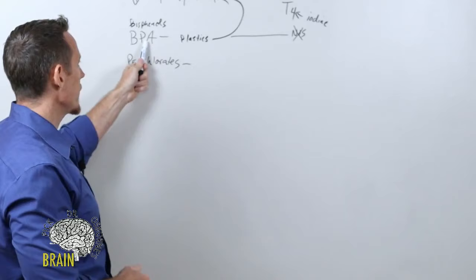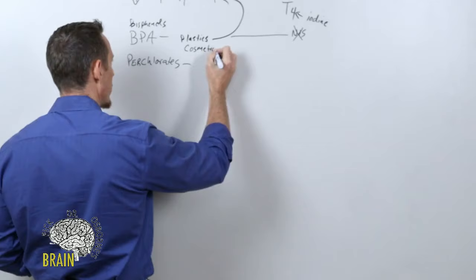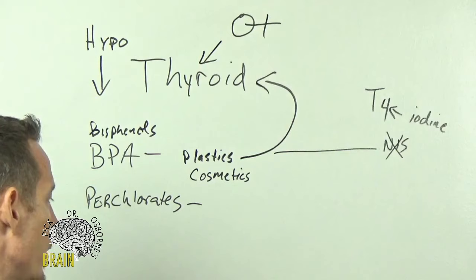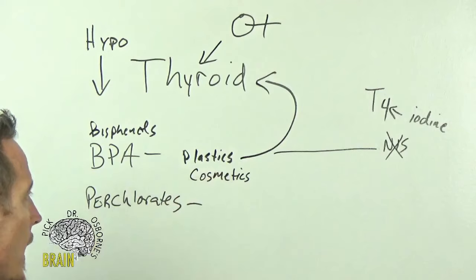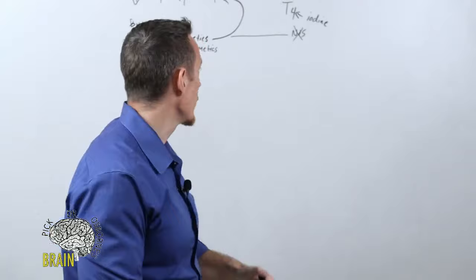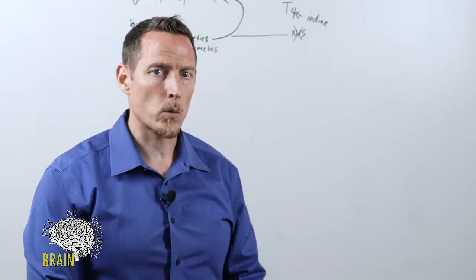Bisphenol chemicals are also commonly found in cosmetics, which is one reason women are disproportionately affected with low thyroid. Women typically use more cosmetics than men, so that's one of those increased risk factors. If you're using a lot of plastics, know it can increase hypothyroid problems by reducing your thyroid gland's ability to bring in iodine. Of course, iodine deficiency is notorious for causing low thyroid.